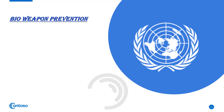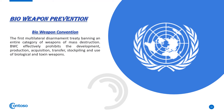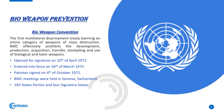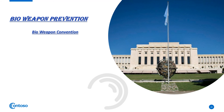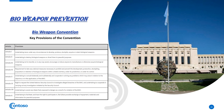Prevention of Bio-Weapons — the Bioweapon Convention: The Biological Weapons Convention (BWC) is the first multilateral disarmament treaty banning an entire category of weapons of mass destruction. The BWC effectively prohibits the development, production, transfer, stockpiling, and use of biological and toxic weapons. It was opened for signature on 10th April 1972, and entered into force on 26th March 1975. Pakistan signed it on 4th October 1972. The General Headquarters of the BWC are in Geneva, Switzerland. There are 183 state parties and 4 signatory states.